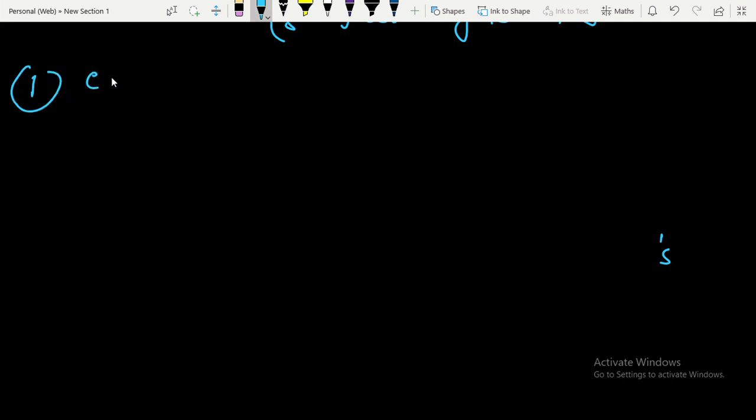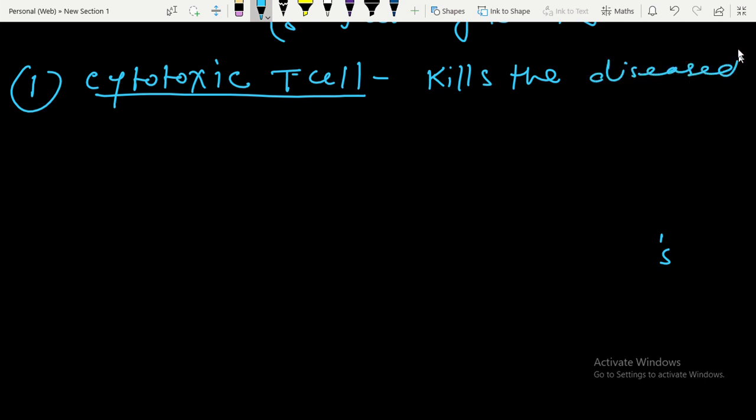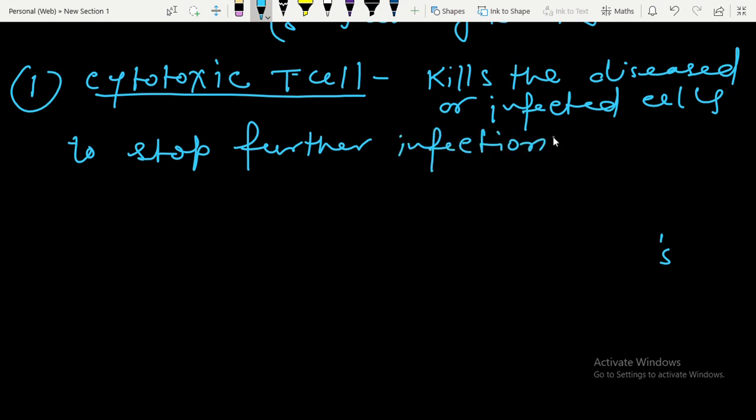Number one, the function of cytotoxic T-cell. Cytotoxic T-cell kills the diseased or infected cell. It kills the diseased or infected cells to stop further infection. This kind of immunity is known as cell-mediated immunity.